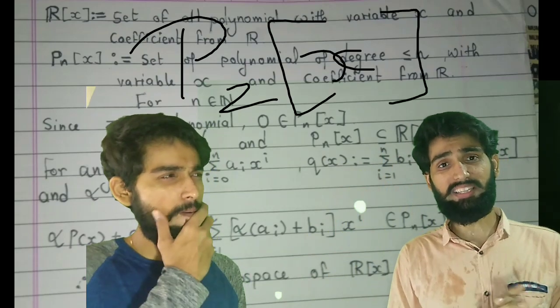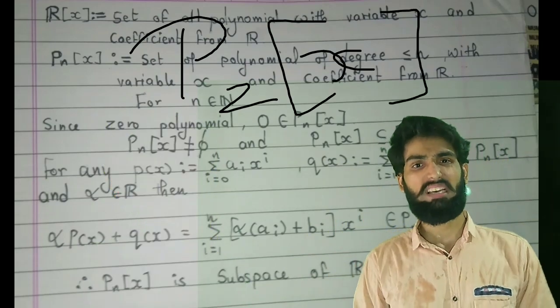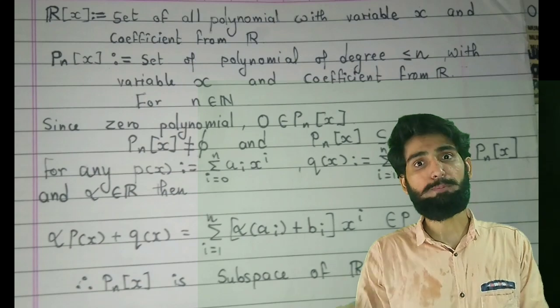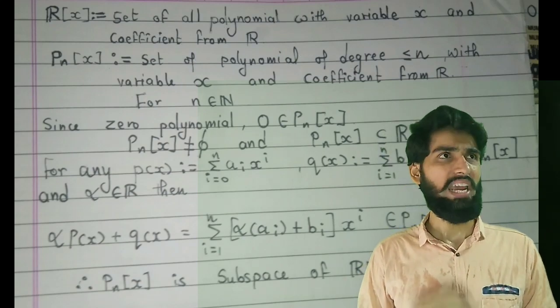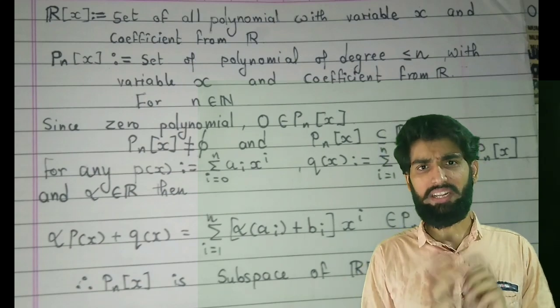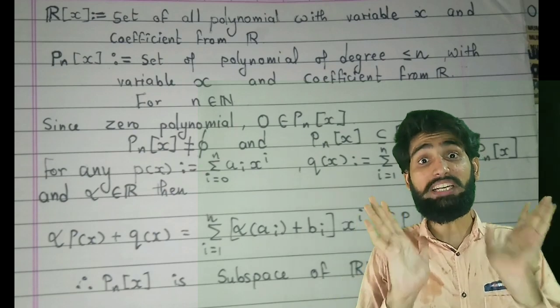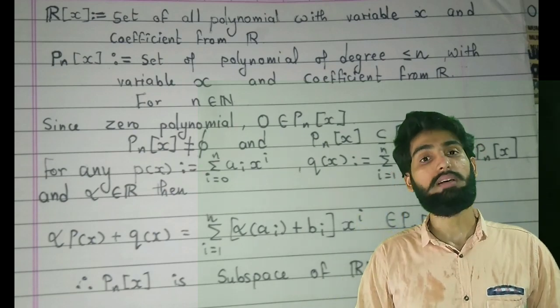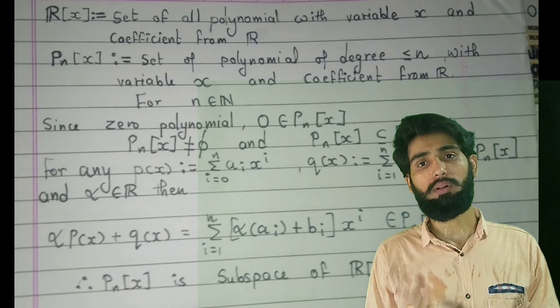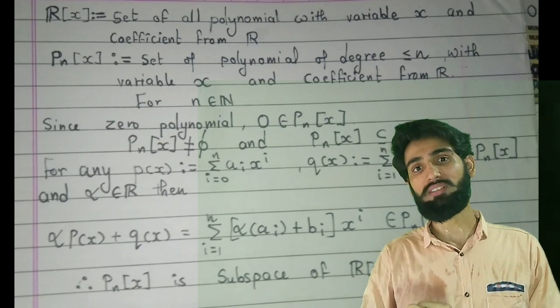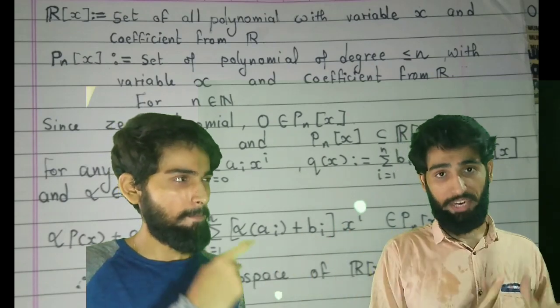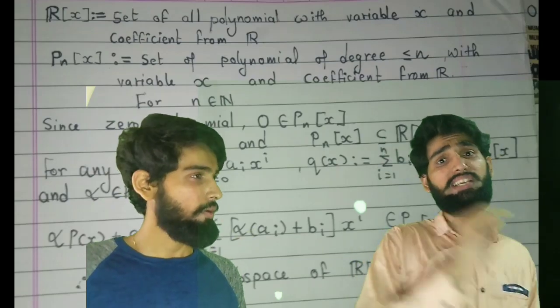Suppose if I define P_2[x] as nothing but set of all polynomials of degree 2, then can it be a subspace of R[x]? If you think about it, you will note that if I define polynomials of degree 2 only, then my 0 polynomial is not an element of it, hence it cannot be a subspace.